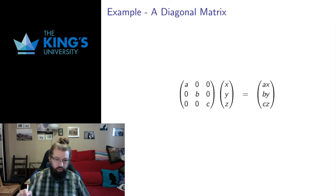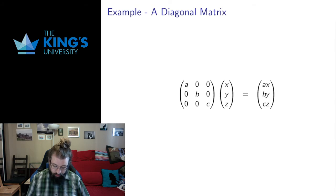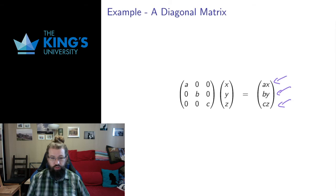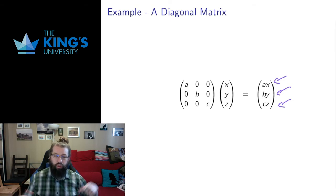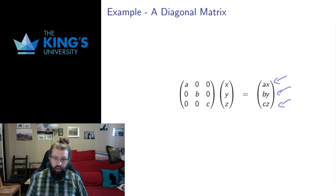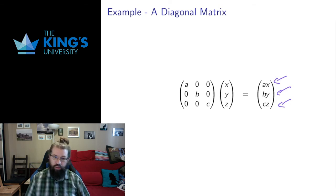Very similar to the identity matrix is a diagonal matrix. Instead of ones down the diagonal, we can have other numbers. These stretch the axis directions — they're called dilations. This stretches all the X values by factor A, the Y-axis by B, the Z-axis by C, scaling each axis independently.